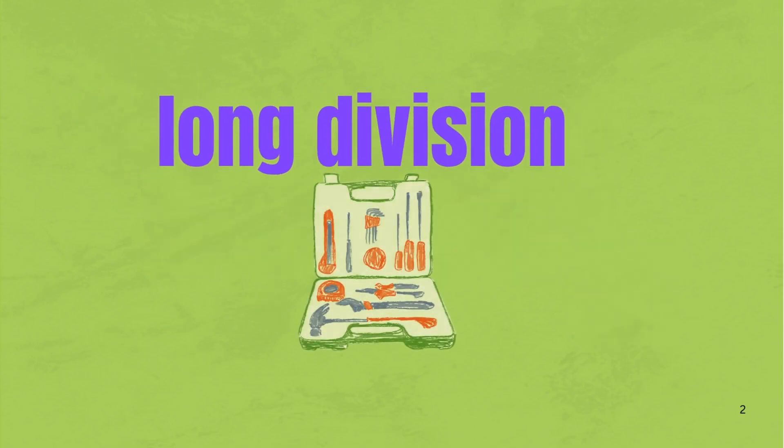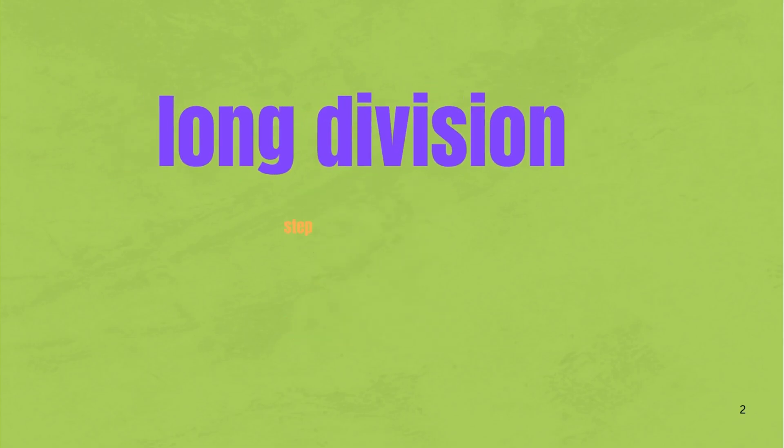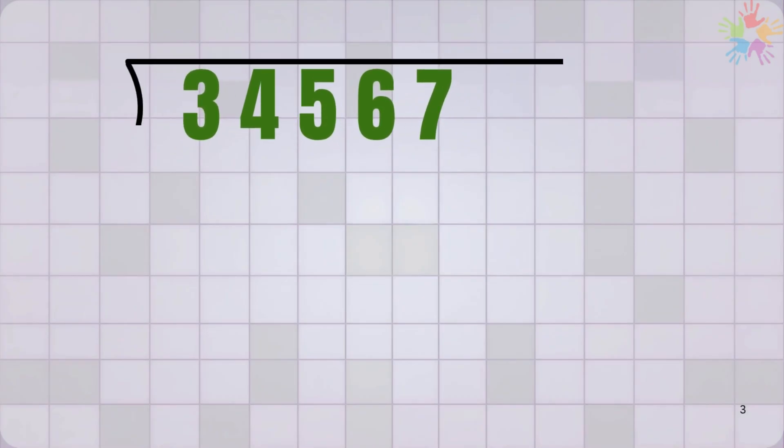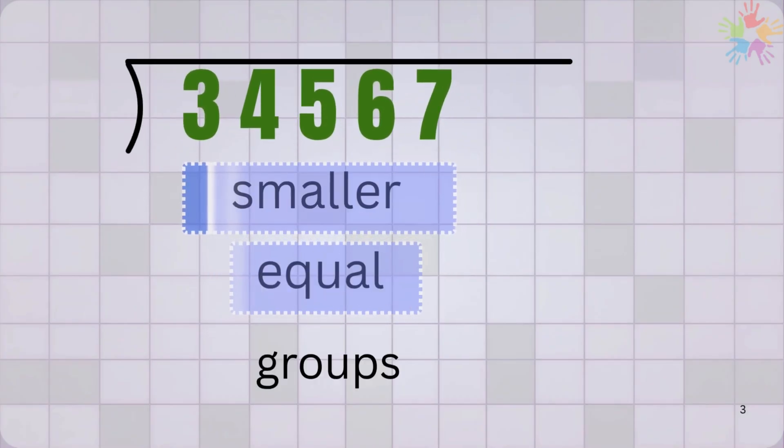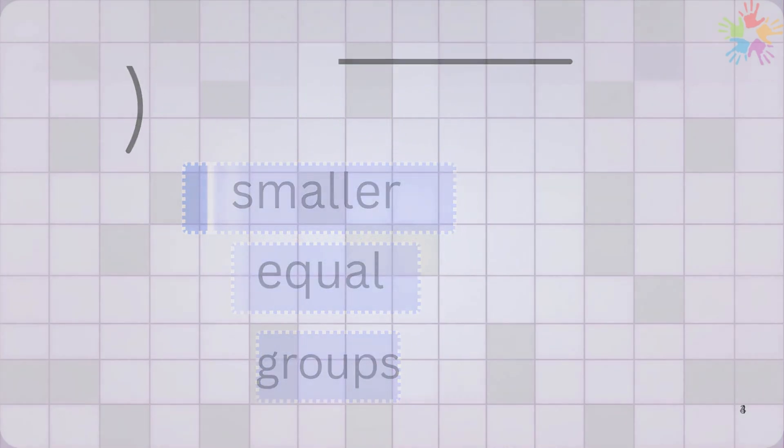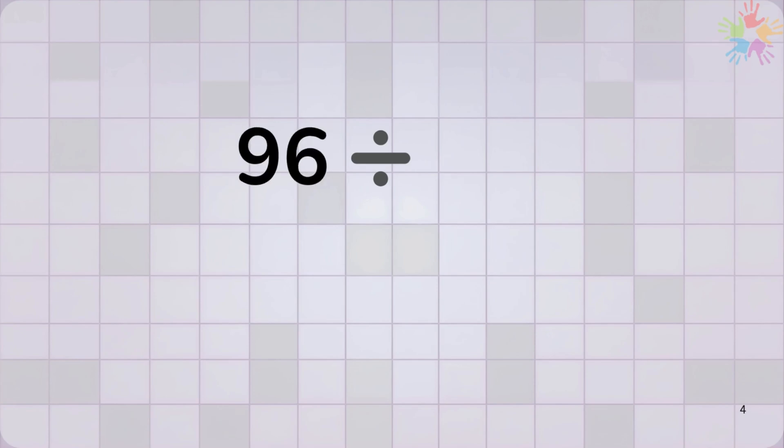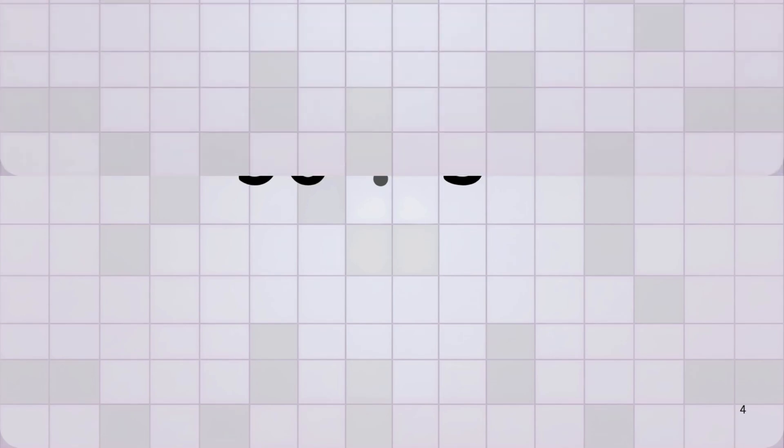It's like a tool. No, not this kind of tool. Well, long division is a step-by-step way to divide big numbers into smaller equal groups. If you've ever asked yourself how to divide something like 96 by 3, then this lesson will definitely show you exactly how. Let's begin.